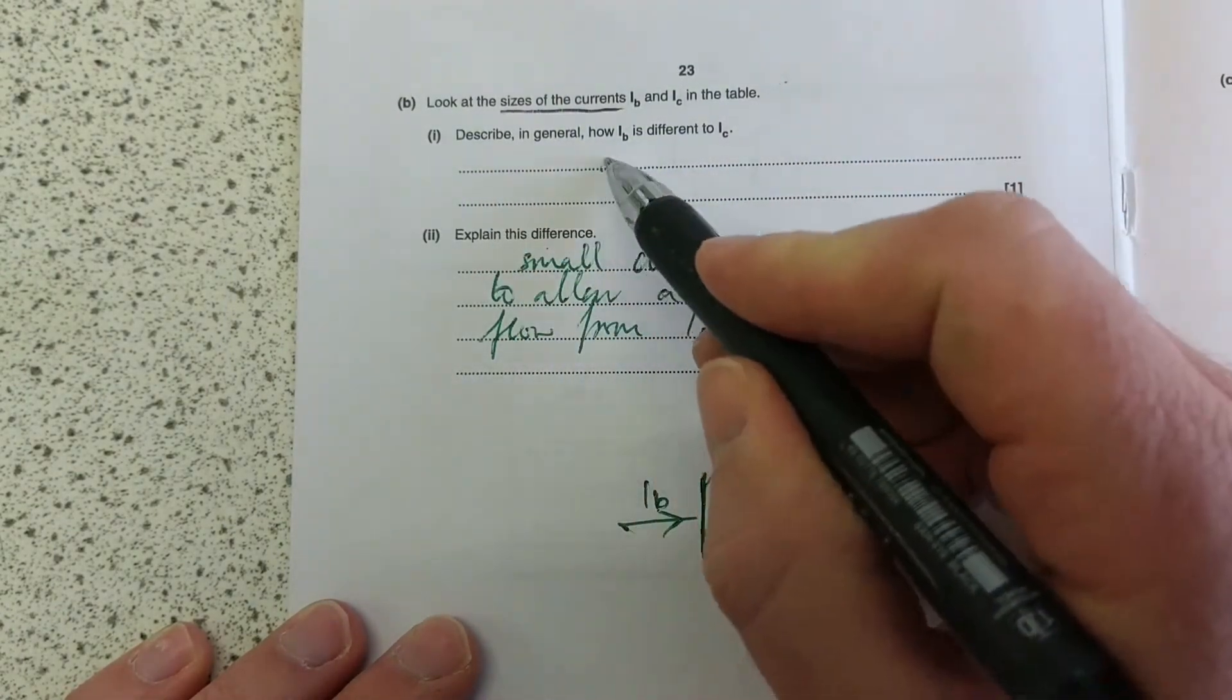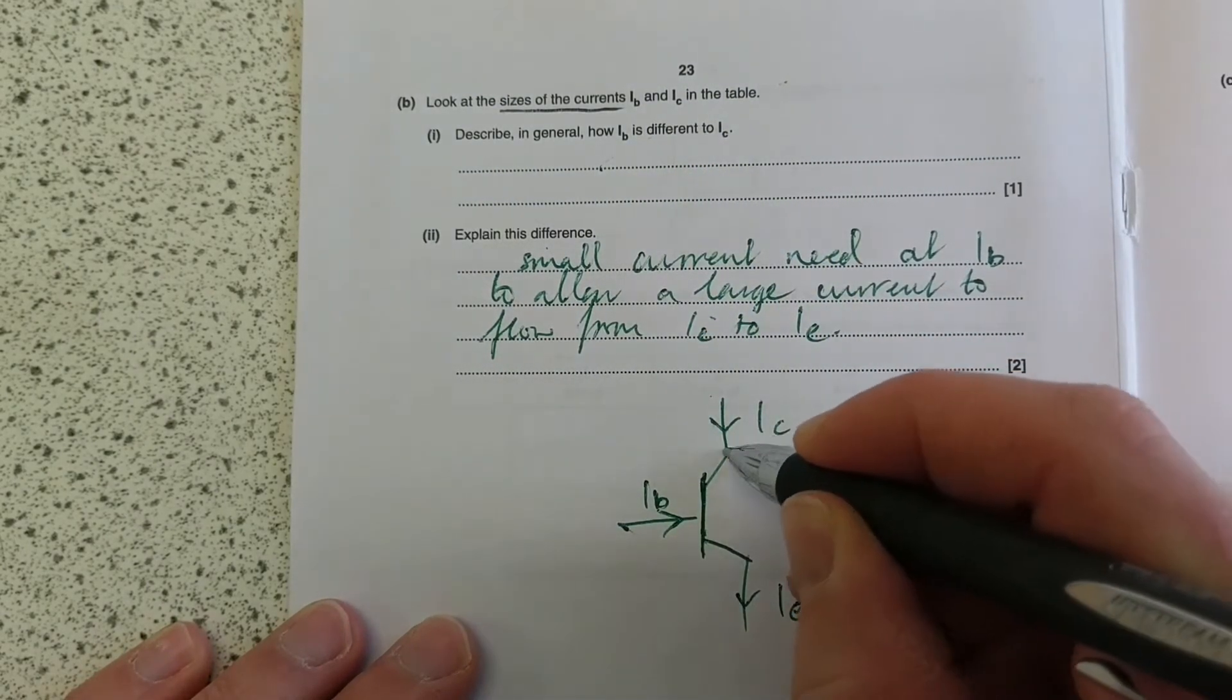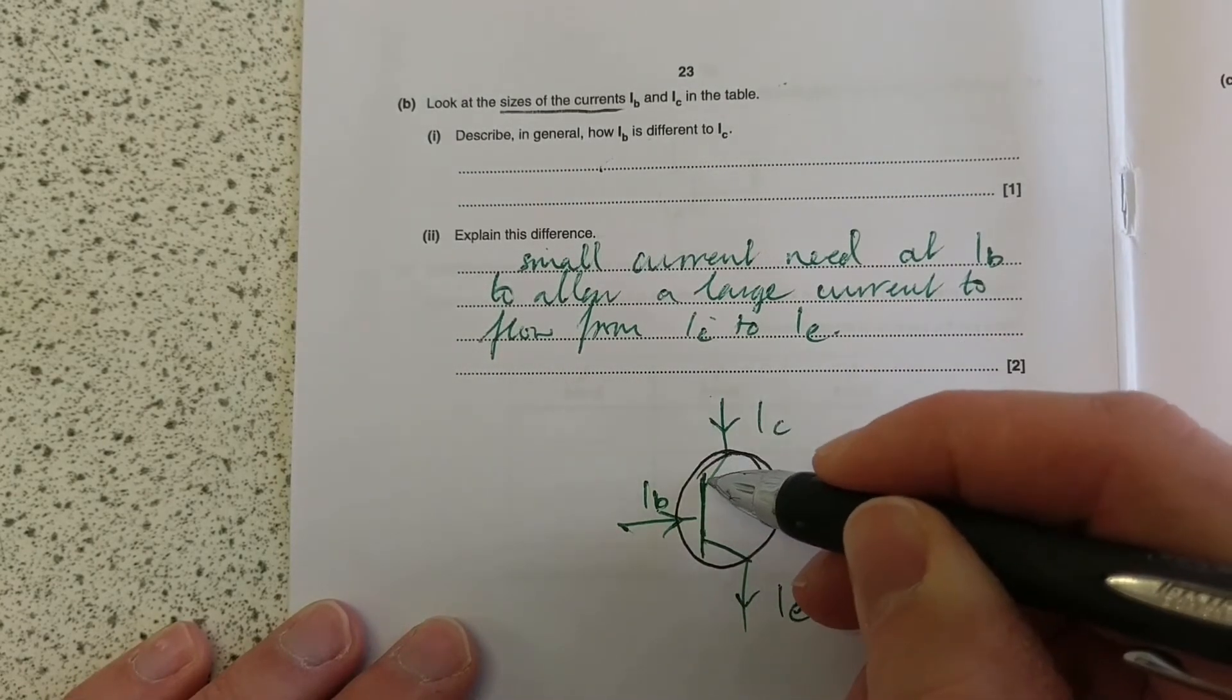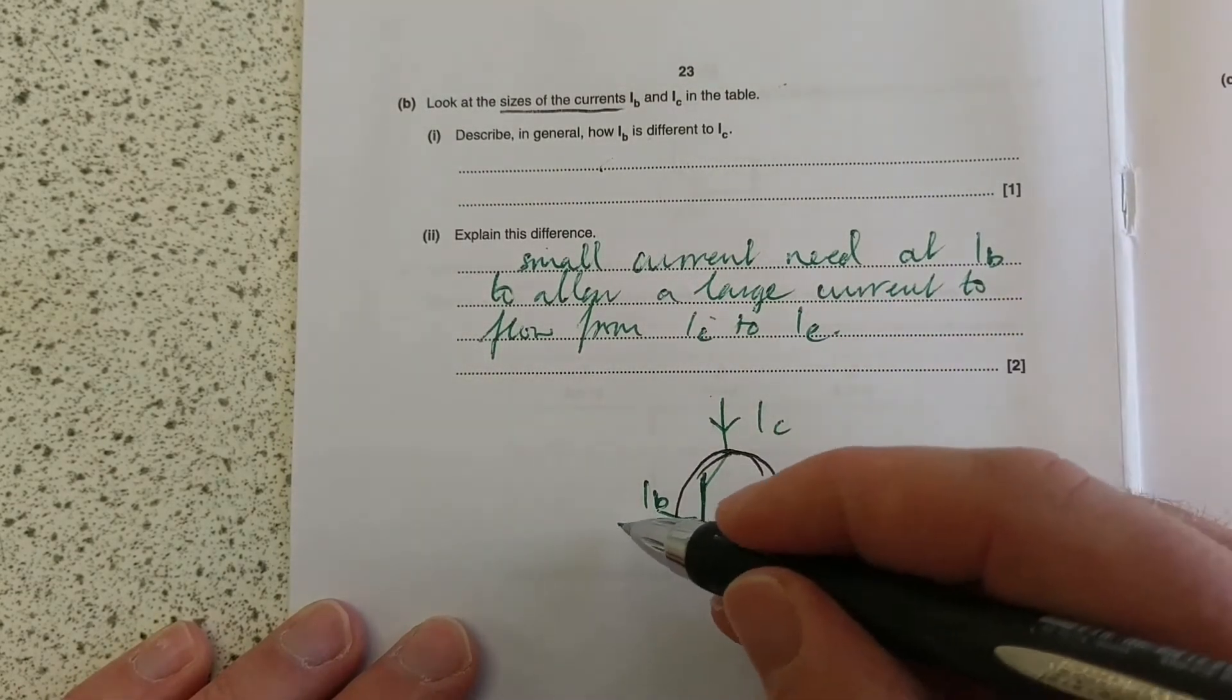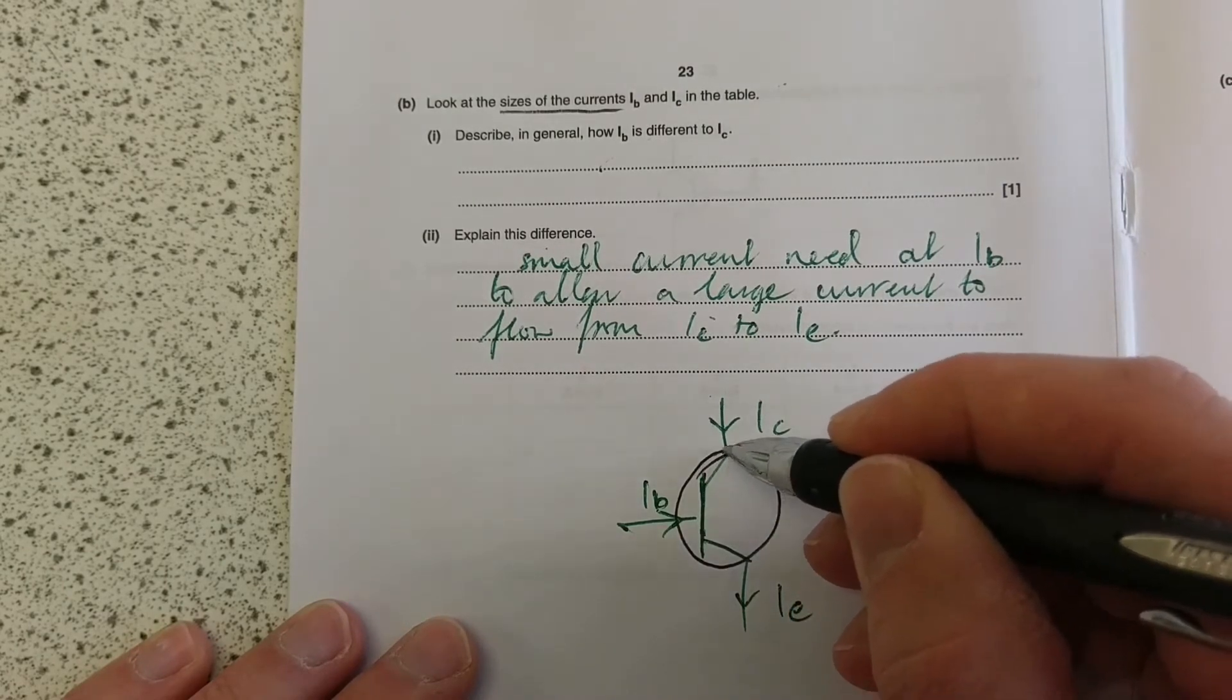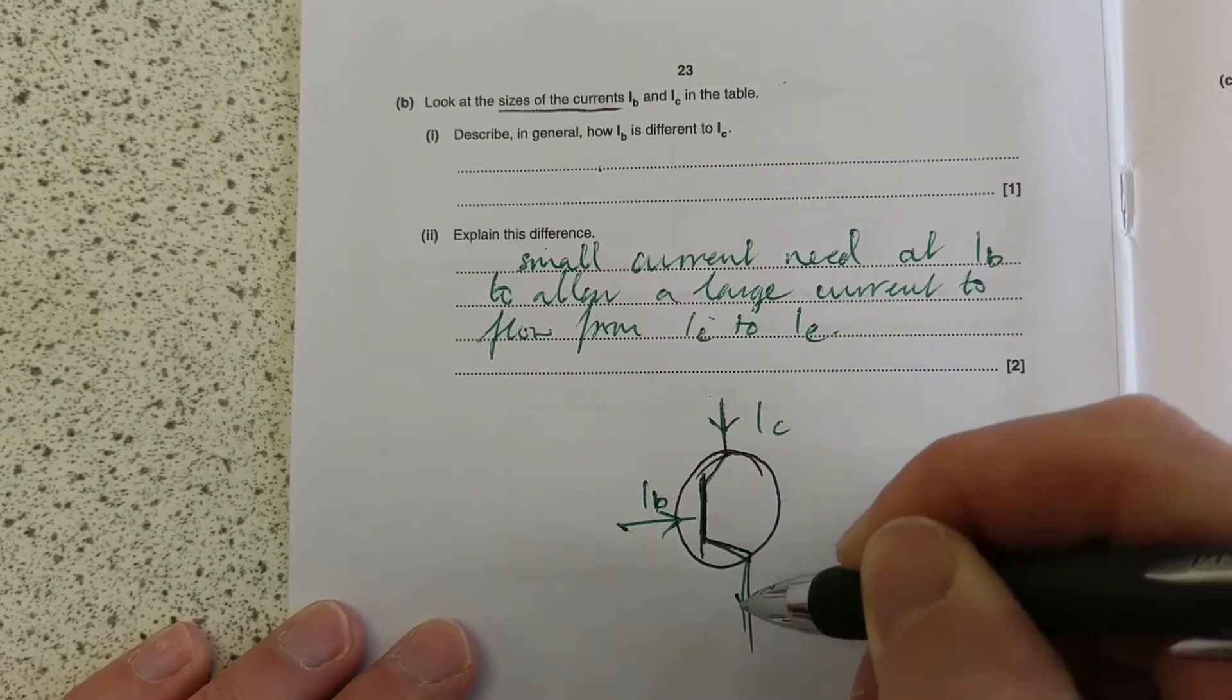So in general, B is smaller than C. The base, this is for a transistor we're talking about here, the base current is smaller than the collector current. Essentially, the base is like the switch-on-off current. It allows the conduction to go through this semiconductor here to come out the emitter.